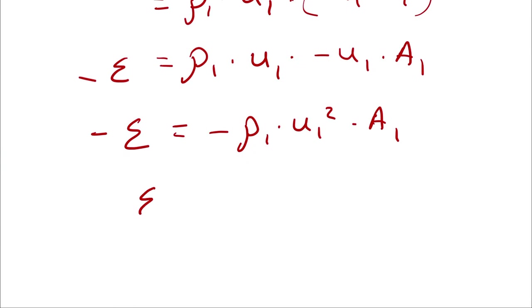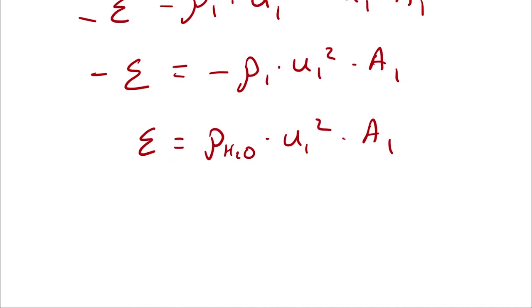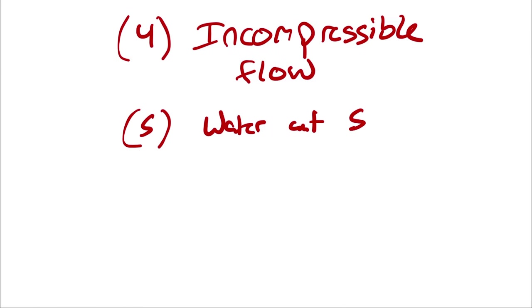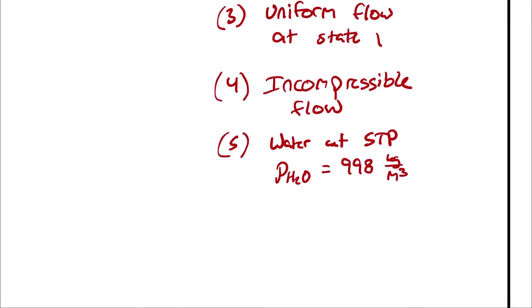Anyway, epsilon then would just be the density of the water times the velocity that we were given at state 1 times the cross-sectional area at state 1. I'm going to assume standard temperature and pressure for the water, which means that I'm going to be using a value of 998 kilograms per cubic meter. And that comes from table A1 or A3.